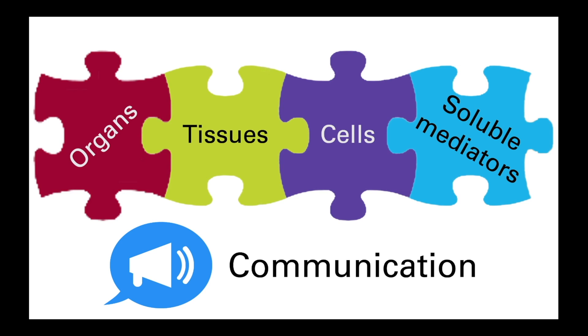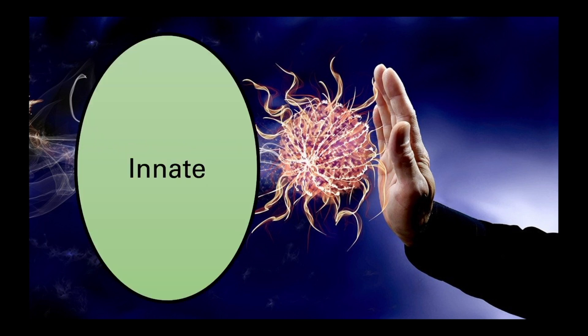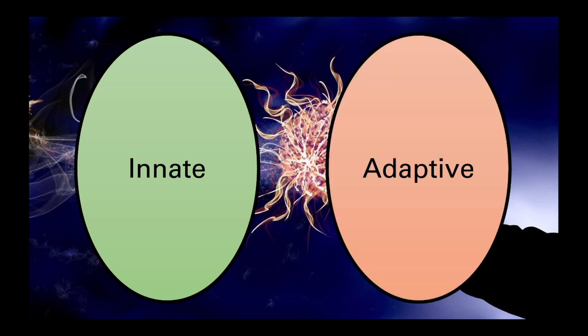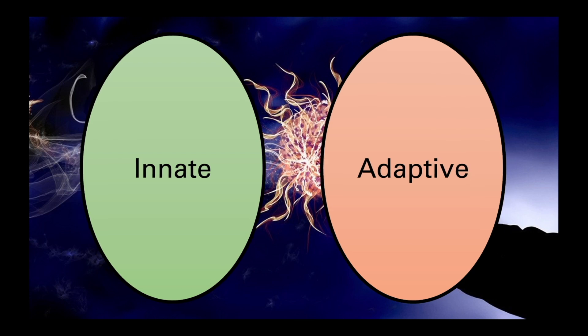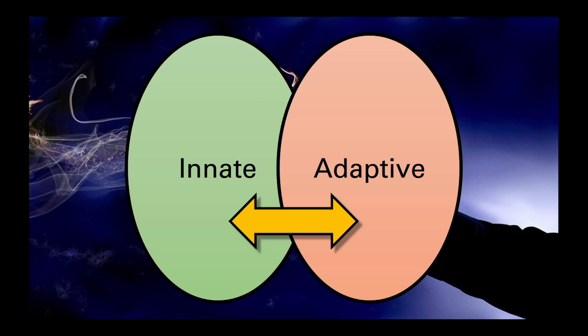The human immune system can be broadly divided into two parts: the innate system, which we are born with, and the adaptive system, which develops as the body becomes exposed to microbes and the chemical mediators that they release. While we often teach each part of the immune system separately to begin with, it's important to note that these two systems are working together in parallel and there is significant overlap and crosstalk between the two systems.